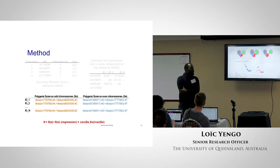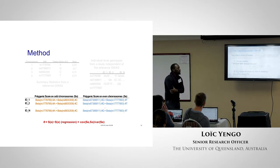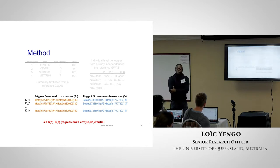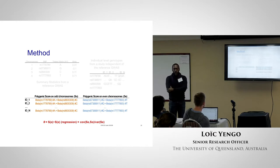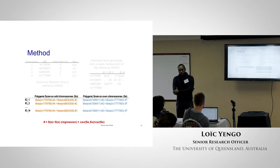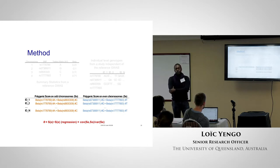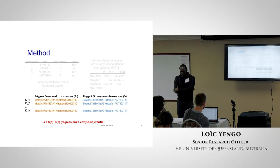Can you get more information out of the data by making a polygenic score from a single chromosome and regressing it on polygenic scores from all the other chromosomes, and doing that many times? Though those observations wouldn't be independent, you could make standard error corrections and maybe get more power.